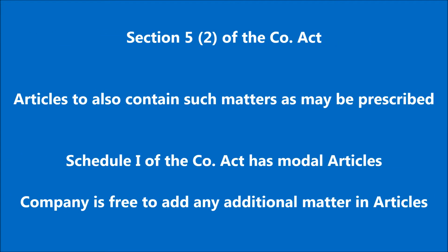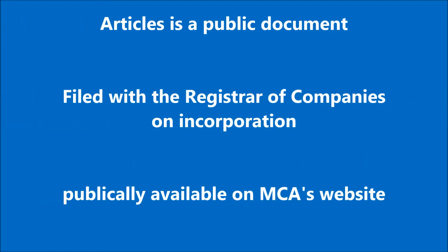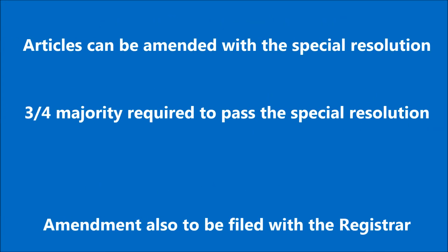Subsection 2 of Section 5 provides that the articles of any company shall also contain such matters as may be prescribed. Different model articles have been provided under Schedule 1 of the Companies Act for different types of companies. Any company is free to add any additional matter in its articles. Articles are public documents and filed with the Registrar of Companies at the time of incorporation. Articles can be amended any time with a special resolution passed by the members, and any subsequent amendments in the articles shall also be filed with the Registrar.